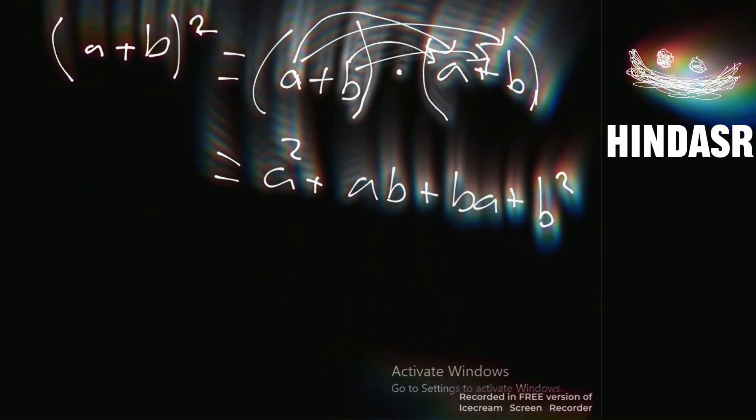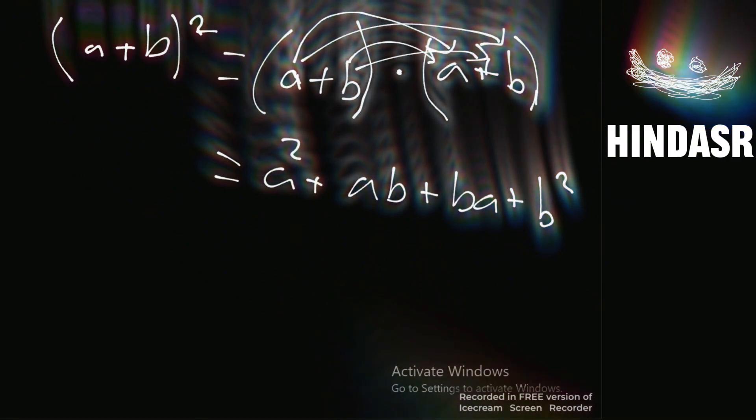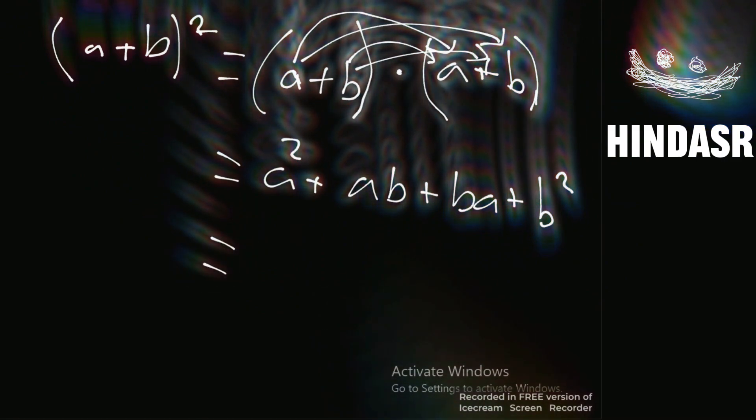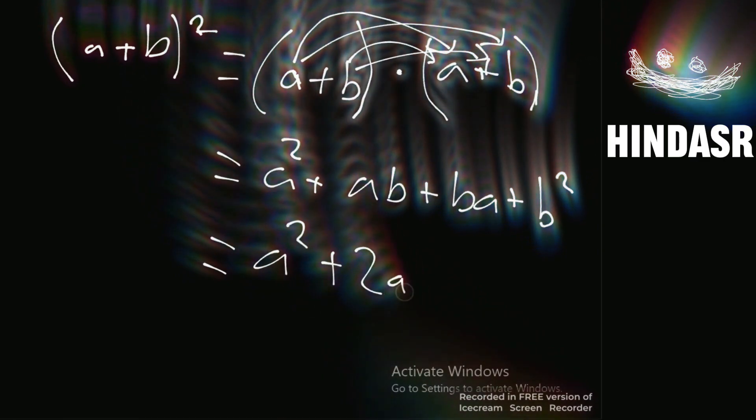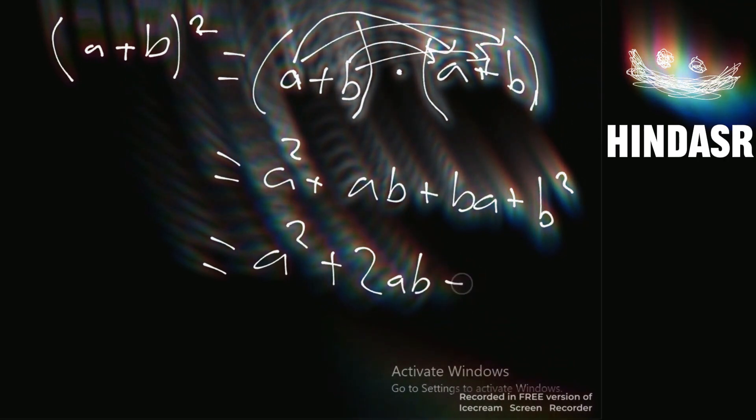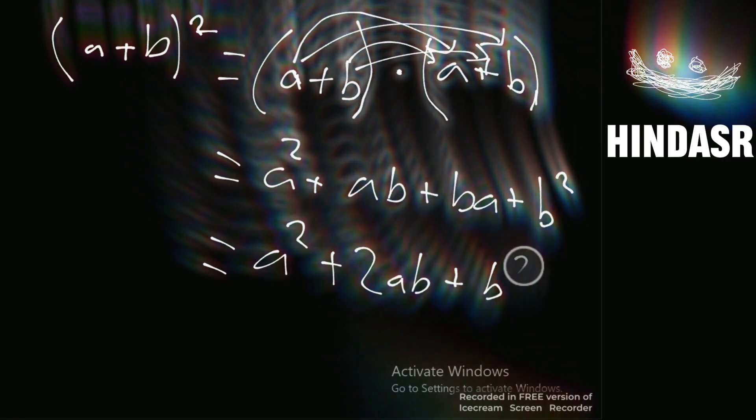So ab and ba are equal, so we're just going to put that in a squared plus 2ab plus b squared.